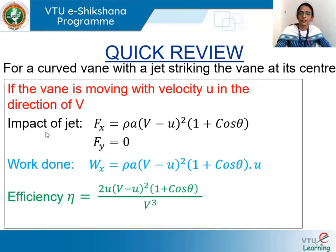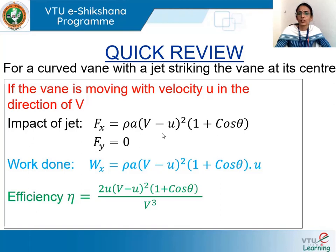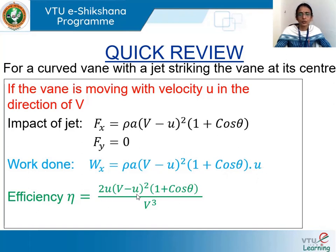Recollecting what we discussed in the previous lecture: if a jet is impinging on a curved vane moving with velocity u along the same direction as jet velocity v, the force along the x-direction is Fx = ρa(v−u)²(1+cosθ), the force along y is Fy = 0, the work done per unit time is Wx = ρa(v−u)²(1+cosθ)·u, and the efficiency is 2u(v−u)²(1+cosθ) divided by v³.